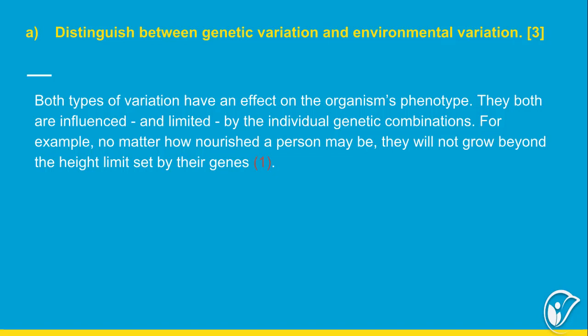Such types of variation cannot be passed on to offspring. Both types of variation have an effect on the organism's phenotype. They both are also influenced and limited by the individual's genetic combinations. For example, no matter how nourished a person may be, they will not grow beyond the height limit set by their genes.